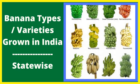Welcome to our channel Agriculture and Technology. In today's video we are going to see the different types of banana varieties grown in India. In India, banana contributes to 31.72% of the total fruit production. India is the largest producer of banana in the world.